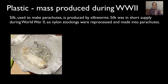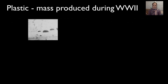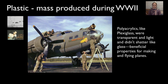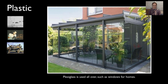Silk was used to make parachutes, but during the war silk was in short supply, so nylon stockings were reprocessed into making the parachutes that were needed. Polyvinyl chloride (PVC), created in 1872, was used to insulate electrical wires and was mass-produced for aircraft during WWII — we still use PVC today. Polyacrylics like plexiglass were transparent, lightweight, and didn't shatter like glass, making them very useful for airplane windows. We still use plexiglass today for windows, shower doors, and more.